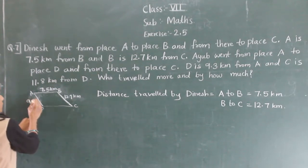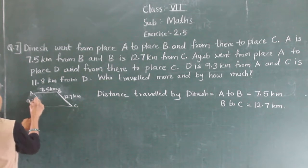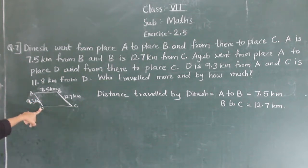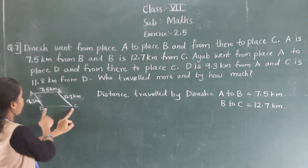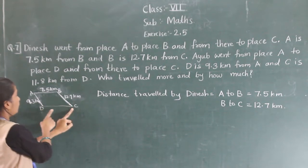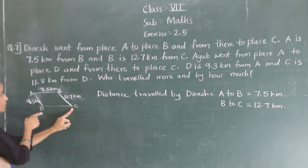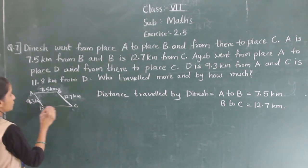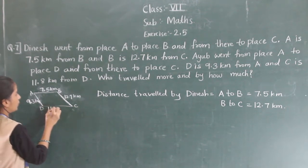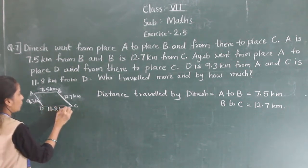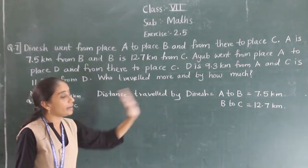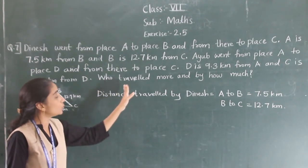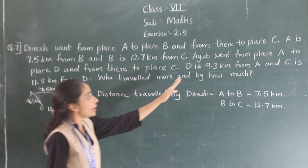So A to D distance is 9.3 km. And C is 11.8 km from D. So D to C distance is 11.8 km. Who traveled more and by how much?